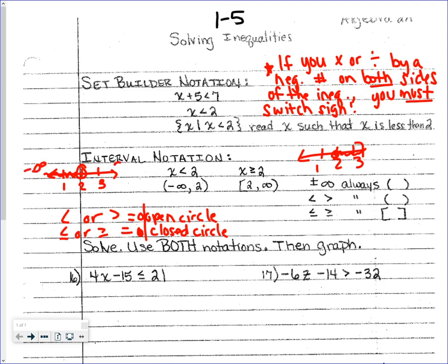When reading a number line you always go left to right — negative infinity on the left, positive infinity on the right. For x less than two, going left to right you start at negative infinity and go up to two, so it's negative infinity comma two. Infinity always gets parentheses, and the two is an open circle so it also gets a parenthesis: (-∞, 2). For a case shaded right from two with a closed circle, it would be [2, ∞).